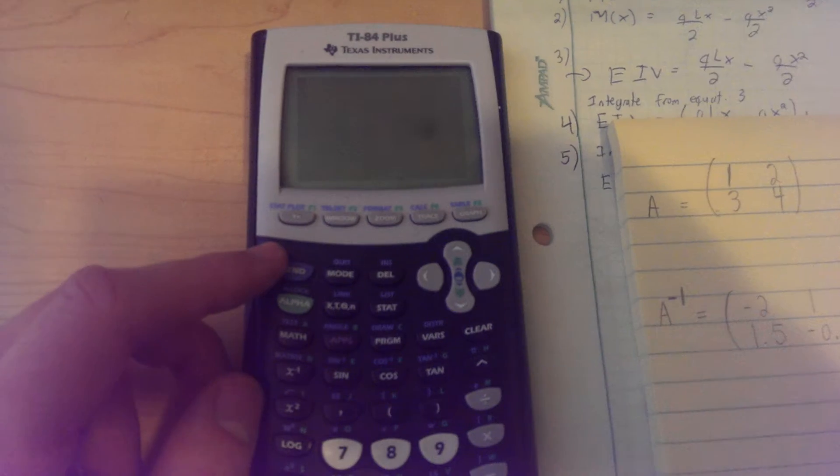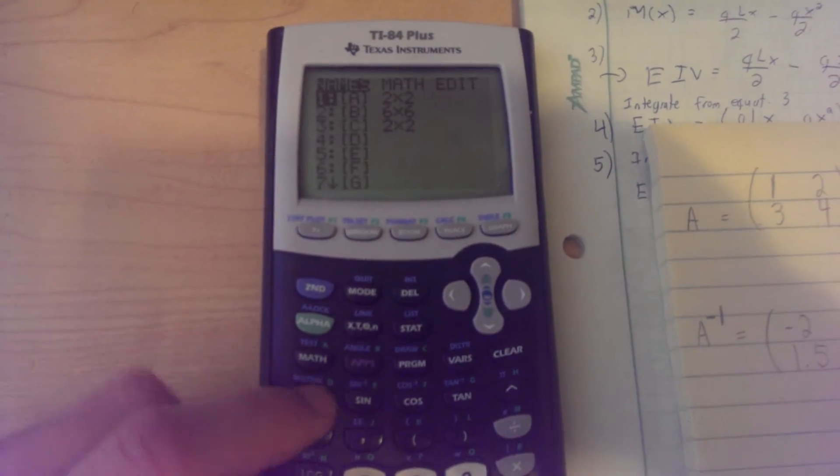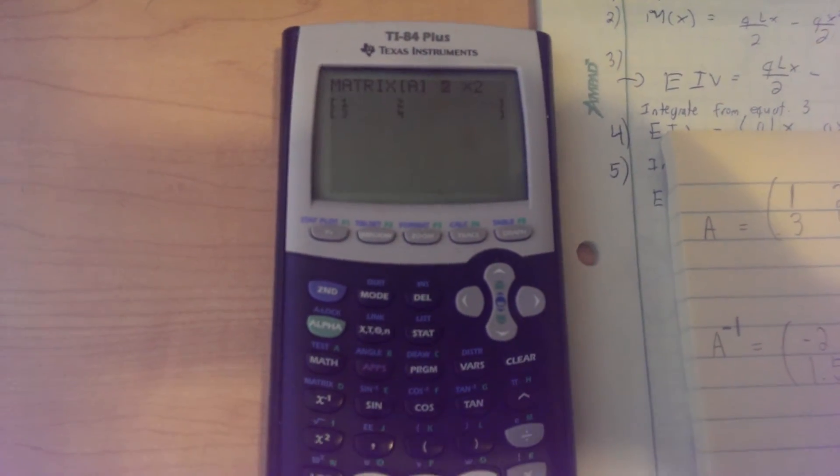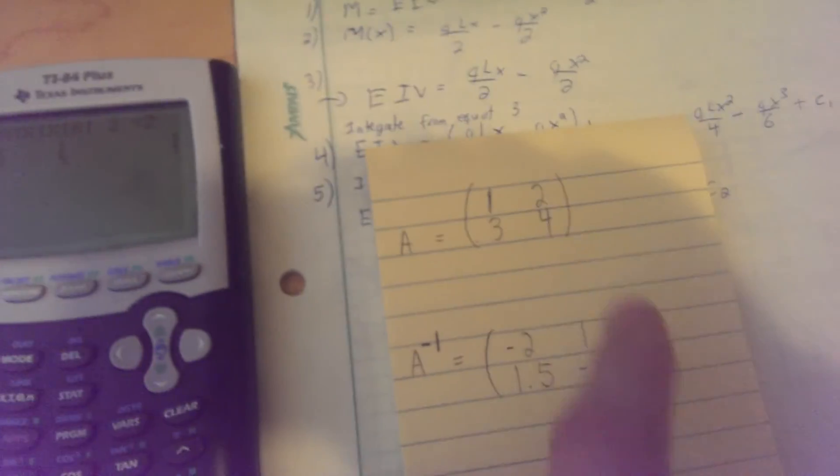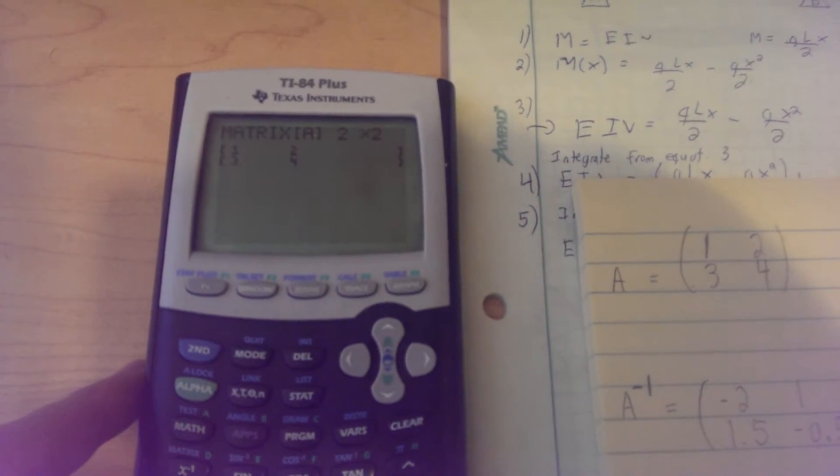The first thing you want to do is obviously make your matrix, so you want to go 2nd, matrix, and edit, and we're going to select A, and obviously it's a 2 by 2 as you can see here. So I'll go 2 by 2.